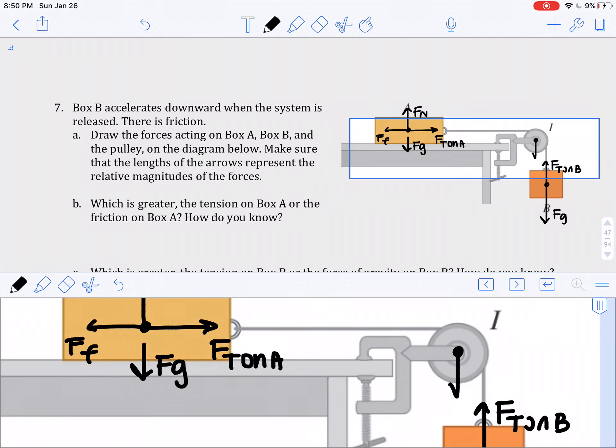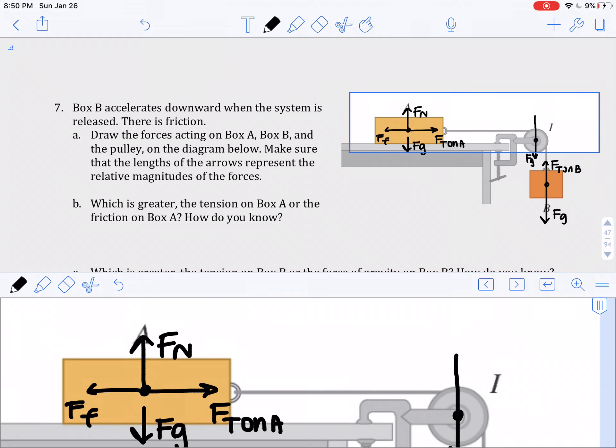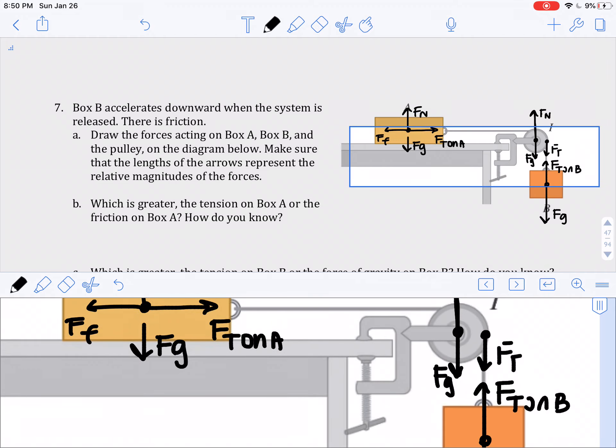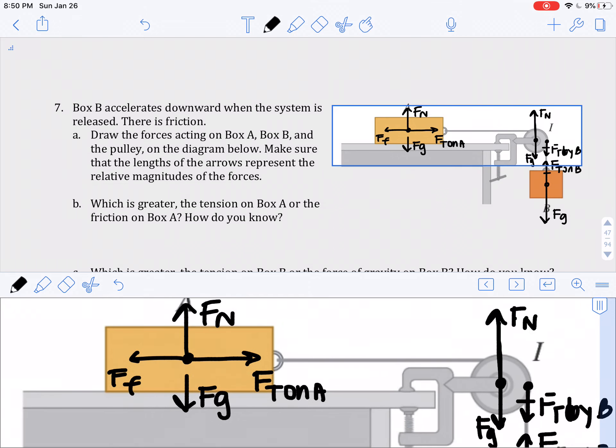So there's going to be a force of gravity. And then there's also going to be this normal force. And then there's going to be FT. And then this should be a Newton's third law pair, because this is by B. And then this one should be a Newton's third law pair with this one.